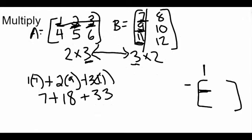And whenever we add all of this together here, so let's see, we have 7 plus 18, which is 25, plus 33 is going to give us a 58. So that means in the first row, first column, we're going to have a 58 there.